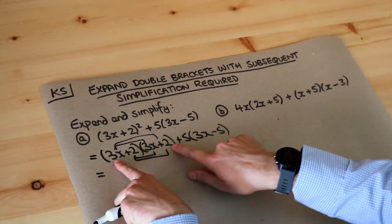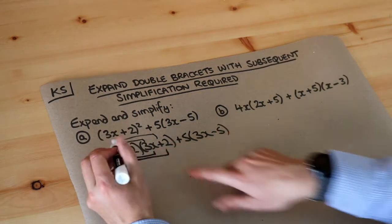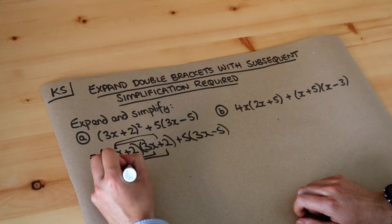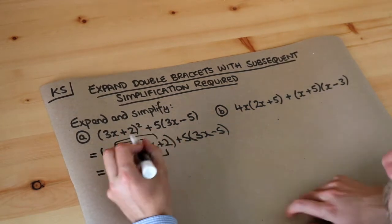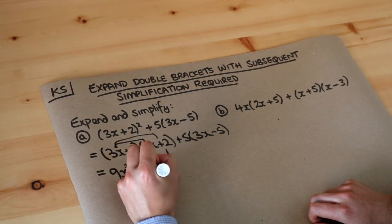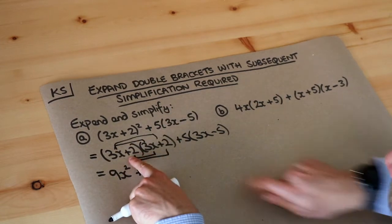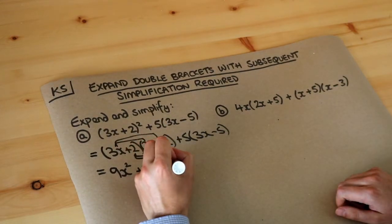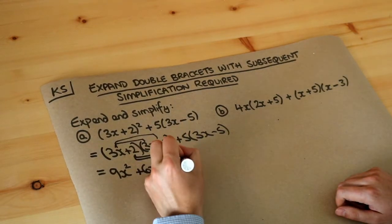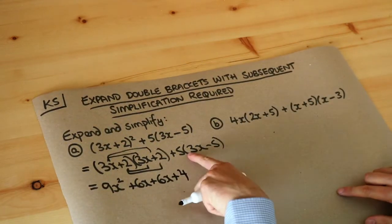So let's do the 3x multiplied by these first. 3x times 3x is 9x squared, not 3x squared because 3 times 3 is 9. The 3x times 2 is 6x and now we do the 2 multiplied by each of these things. The 2 times the 3x is 6x and the 2 times the 2 is 4 and now we've got this single bracket expansion.